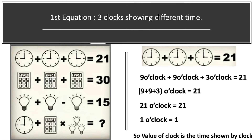So the value of 1 o'clock is equal to 1. That means we can conclude that the value of a clock is the time shown by the clock. So the value of the 9 o'clock image will be 9, and similarly the value of the 3 o'clock image will be equal to 3.